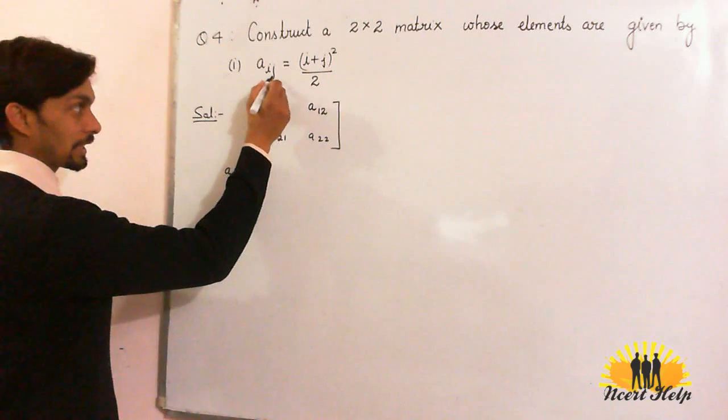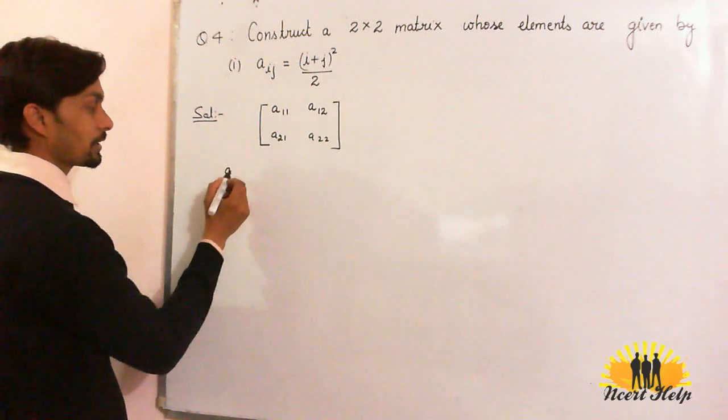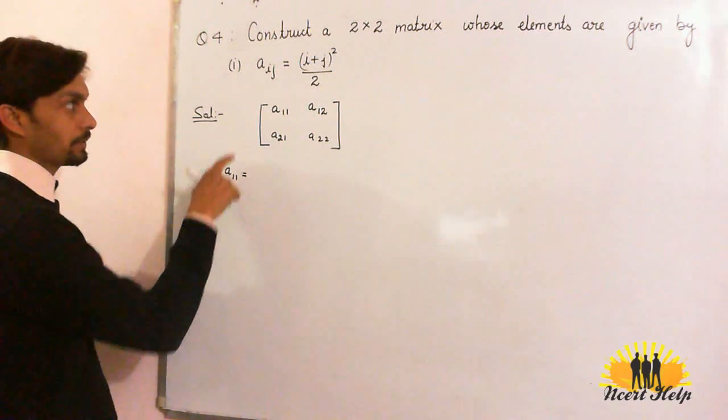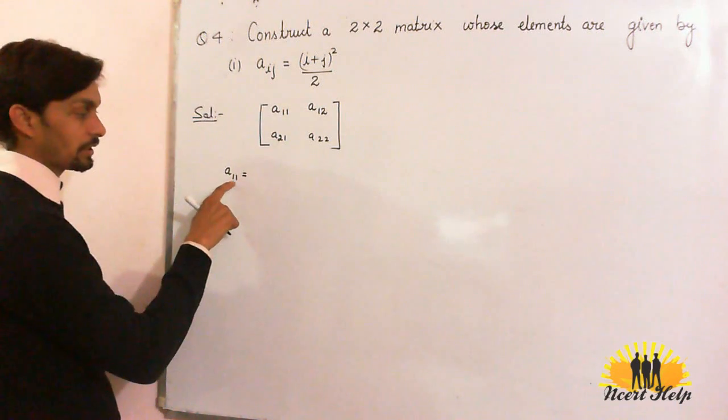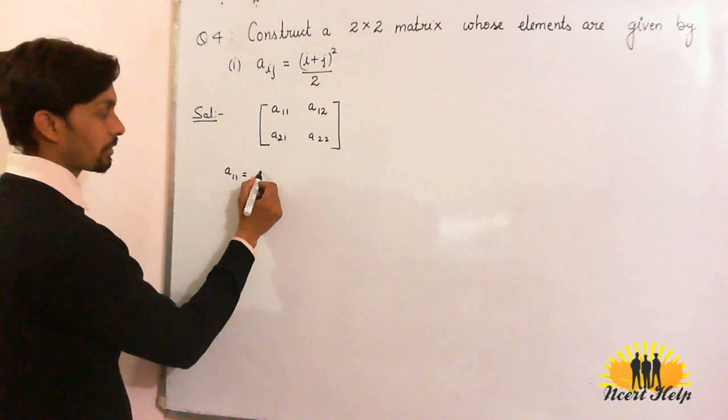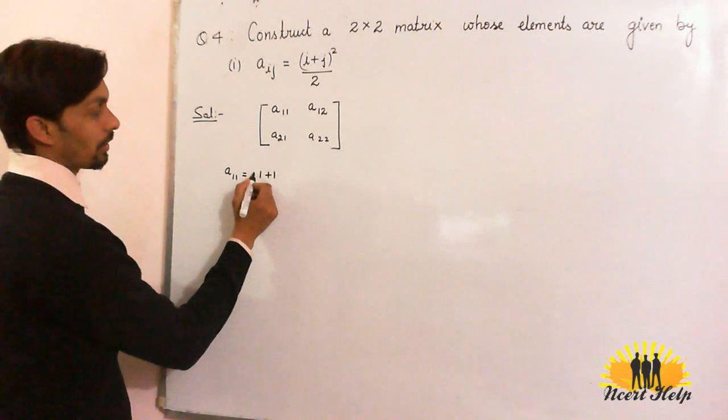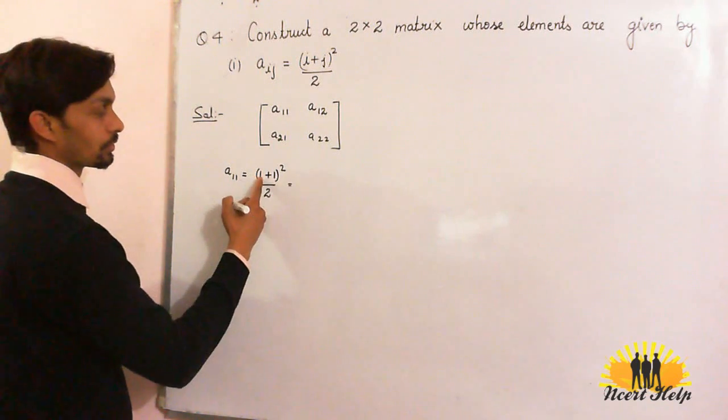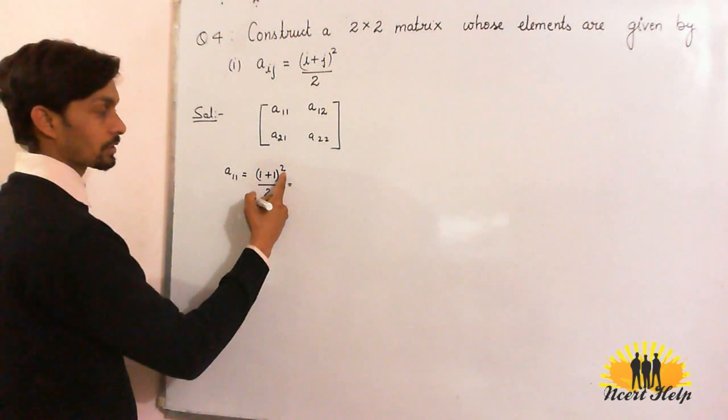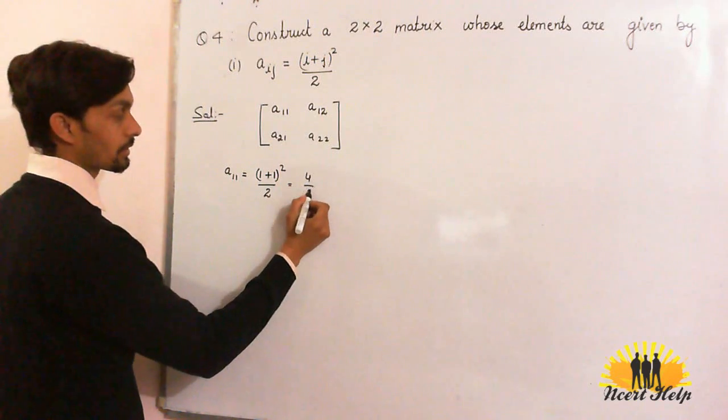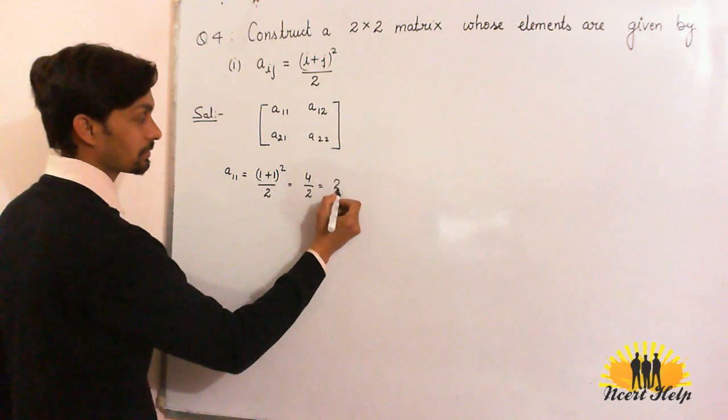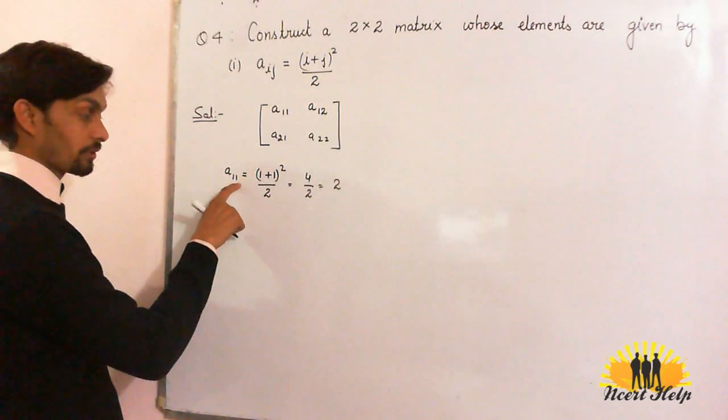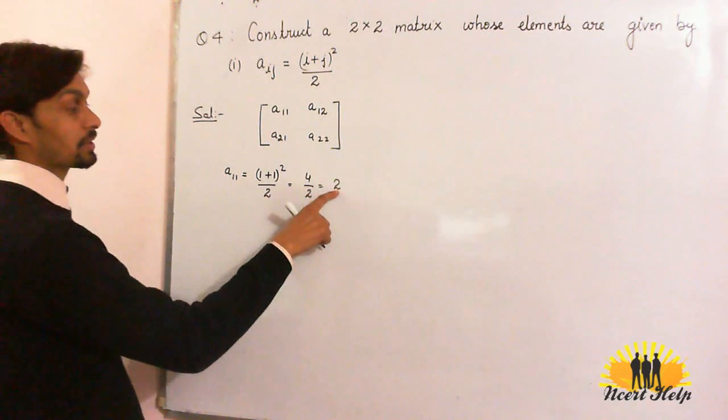We have to calculate Aij by the formula (i+j)² divided by 2. A11 will be, where i is 1 and j is also 1, it will be (1+1)² divided by 2. 1+1 is 2, square of 2 is 4 divided by 2, that is 2. This is the first element of the matrix. A11, first row first column element will be 2.